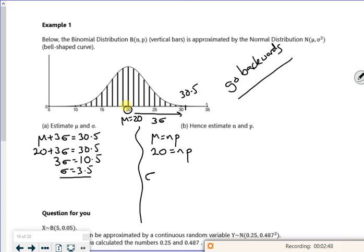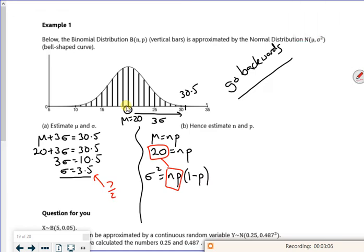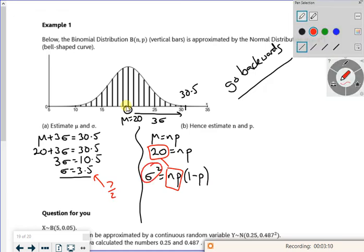So I know that 20 is np. I know that sigma squared is np times 1 minus p. From the information I've got from the question, my np is 20, and my sigma is 3.5, so 7 over 2. So my sigma squared will be 49 over 4 if I do it as a fraction.